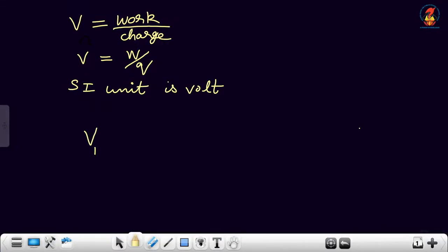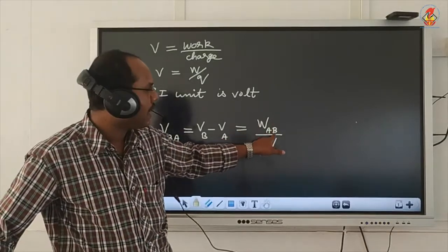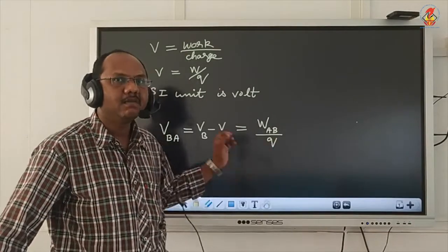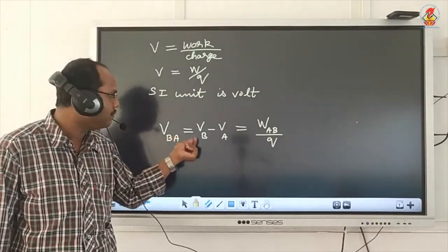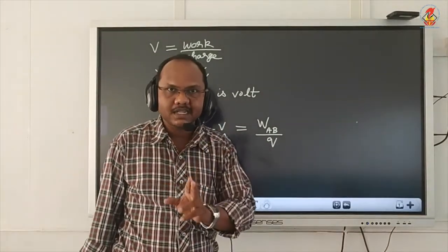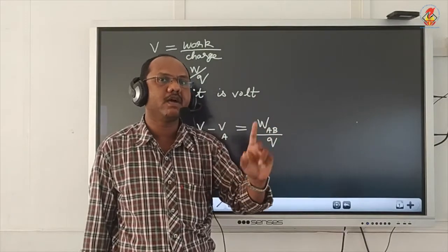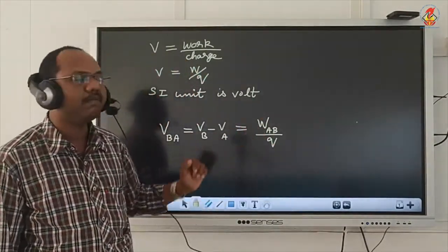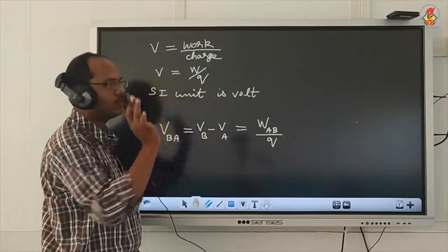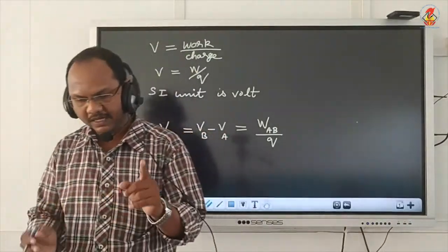Potential difference VBA means potential at B minus potential at A, which equals VB minus VA, and that is equal to WAB divided by Q. So VBA = WAB/Q. Please note: to find the potential difference between points B and A, we consider the work done to bring a unit positive charge from A to B — not from B to A. SI unit is again volt.